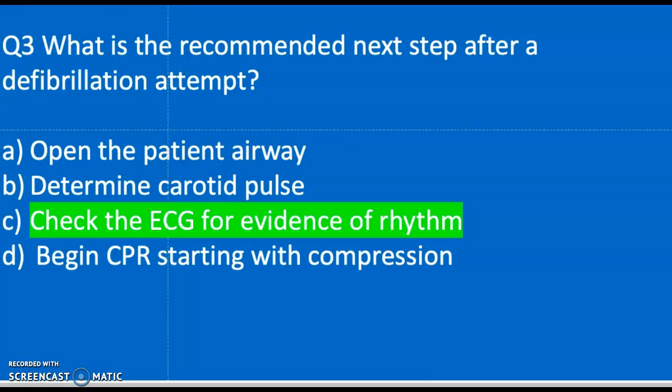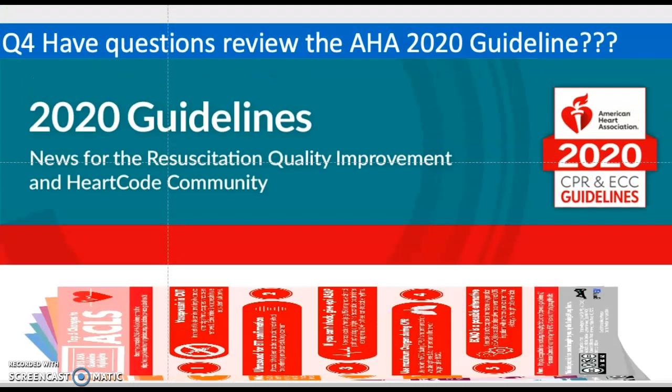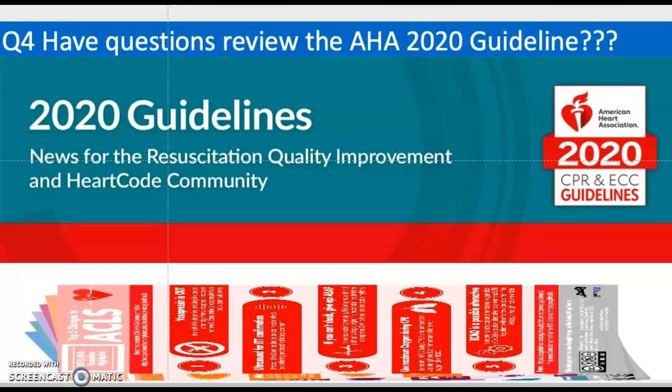Question three: What is the recommended next step after a defibrillation attempt? A) Open the patient's airway, B) Determine carotid pulse, C) Check the ECG for evidence of rhythm, D) Begin CPR starting with compressions. The correct answer is C — check the ECG for evidence of rhythm.